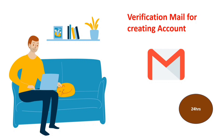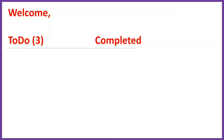The verification mail is valid for 24 hours only, so you need to verify your account within that window. After successful verification, once you log in to your Workday profile, you can see sections labeled 'To Do' and 'Completed'. To Do items are tasks you need to complete, and once you complete a task it moves to the Completed section. Now let us see what tasks you need to complete.